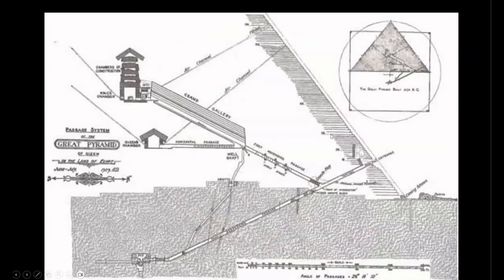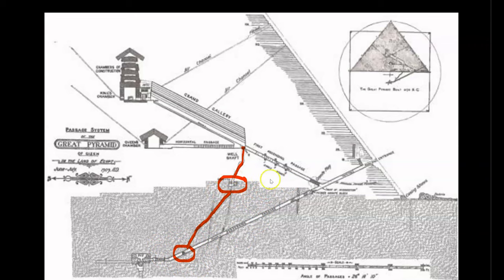Before reaching the subterranean chamber, you must descend through a shaft that passes the well shaft — now highlighted in red — with the lower opening here, the so-called grotto here, and the upper opening into the grand gallery up here.